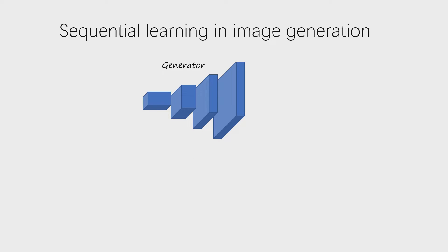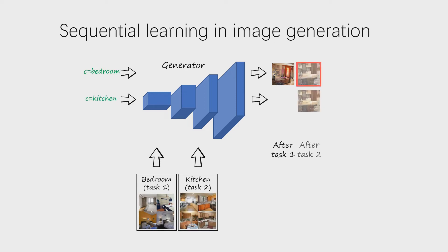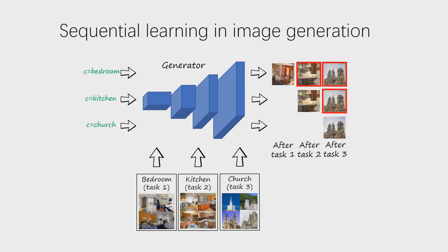However, in the sequential learning setting, each category is considered as a different task. Here, the GAN is first trained with bedrooms, then fine-tuned with kitchens, and then with churches. We can note that in this case, after learning a new task, the network forgets how to generate images from previous ones. This is known as catastrophic forgetting.